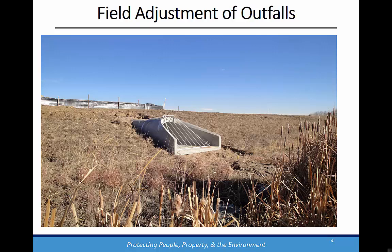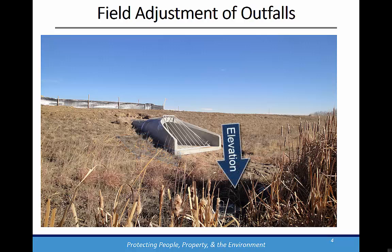In this photo, note that the flared end section appears to be lying on the channel bank. It also appears to be substantially short of the channel invert. A better solution would be to adjust both the outfall location and elevation to match into existing grades as much as possible. This will help prevent scouring from occurring along the pipe and flared end section during high flows in the receiving channel.